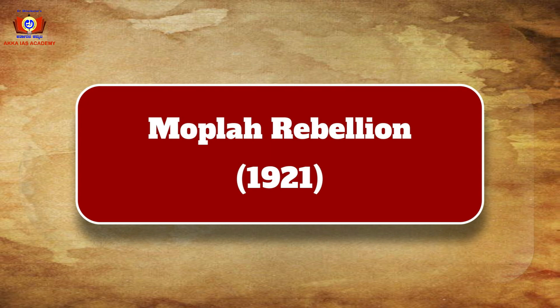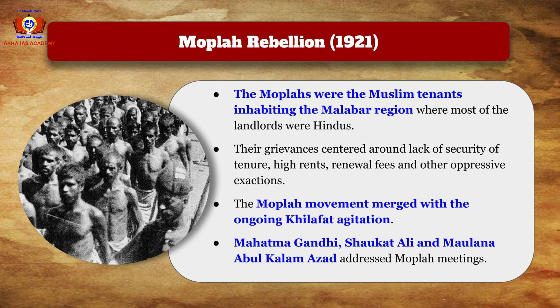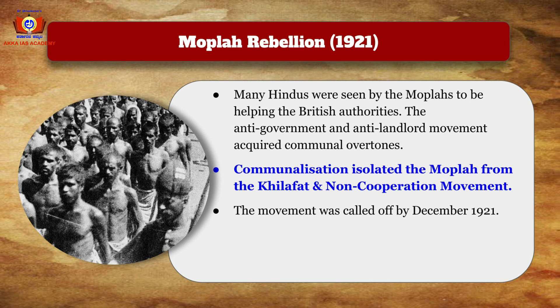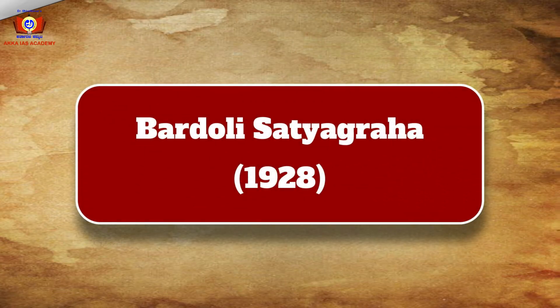In 1921, the Moplah Movement arose among Muslim tenants in the Malabar region, where most landlords were Hindu. Grievances centered around lack of security of tenure, high rents, renewal fees, and other oppressive extractions. The Moplah movement merged with the ongoing Khilafat agitation, and Mahatma Gandhi, Shaukat Ali, and Maulana Abdul Kalam Azad addressed Moplah meetings. However, many Hindus were seen as helping British authorities, and the movement acquired communal overtones, isolating the Moplas from the Khilafat and Non-Cooperation Movement. The movement was called off by December 1921.